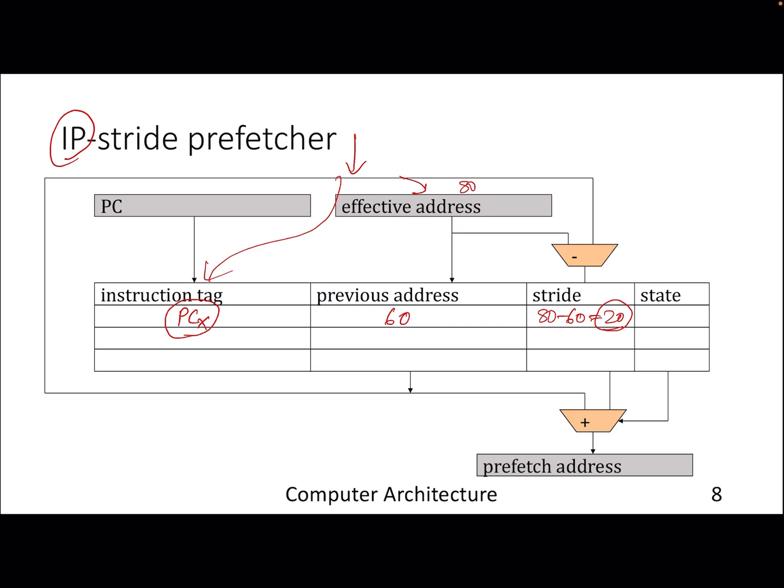Similar to your branch predictor, you can have a confidence bit, let's say two-bit counters. You start with 0-0, then the moment you see the same stride again, you increment that counter to 0-1, then 1-0, and then 1-1. You can fix a policy that once I cross the value 1-0, I will start prefetching. The next time the PC comes, the prefetch address will be the current address...